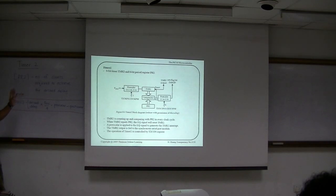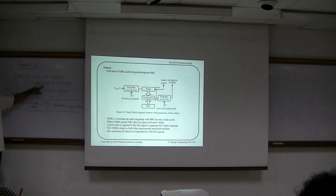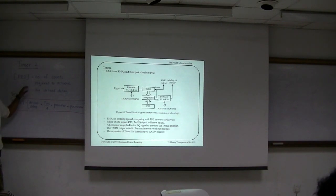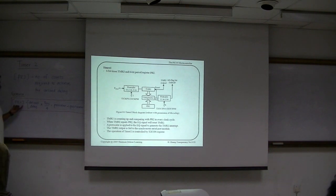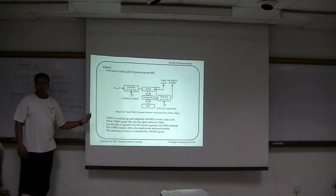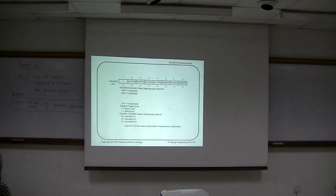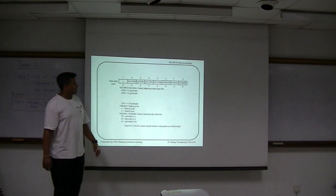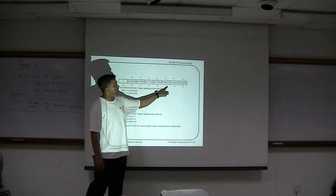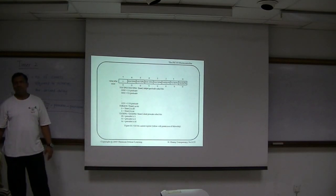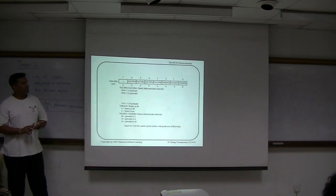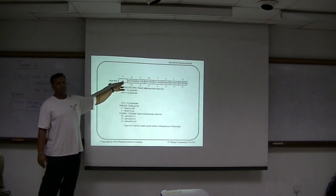For 8-bit timers, the content of PR2 is the number of counts required. How do you configure this? By configuring the T2CON register. The T2CON register is quite simple — it consists of a post-scaler, a timer-on bit, and a pre-scaler. That's all. One bit is a don't-care, so you can leave it as zero.